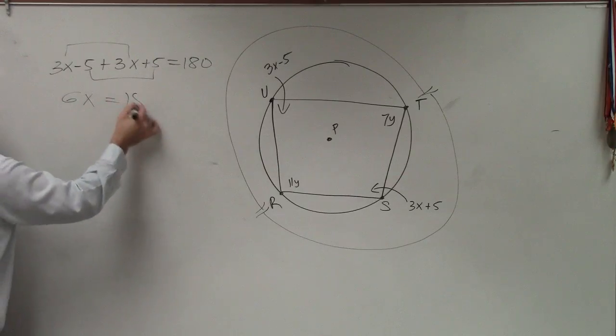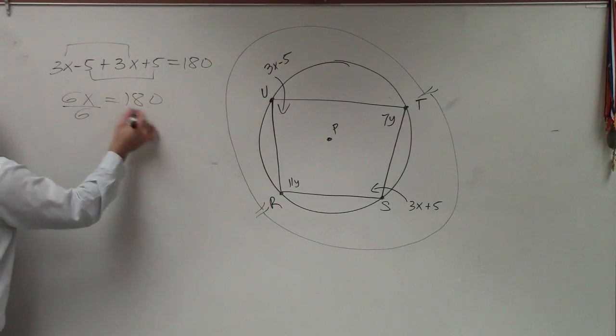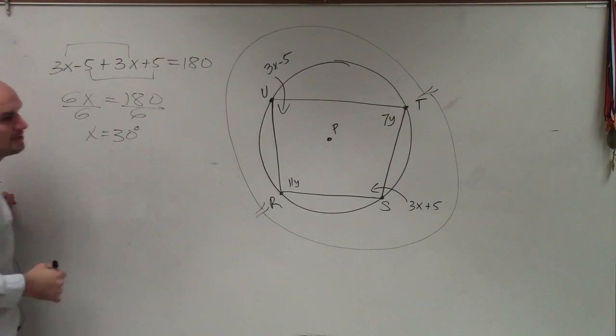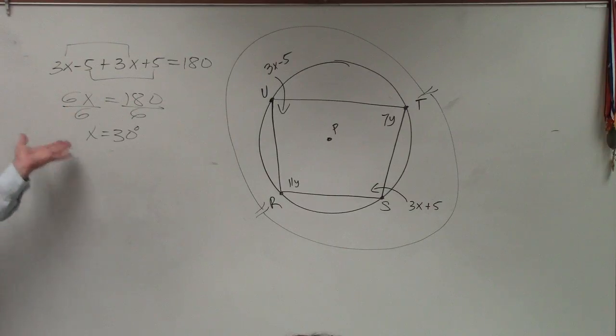So I have 6x equals 180. Divide by 6. OK. So x equals 30 degrees.